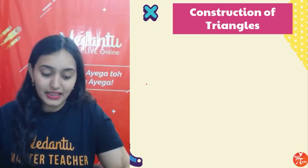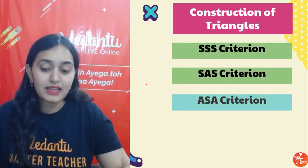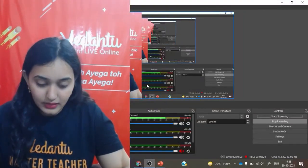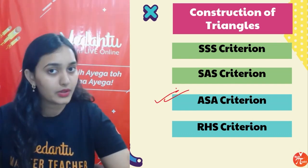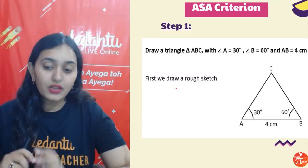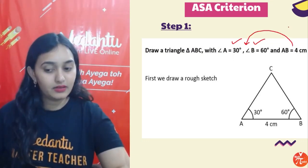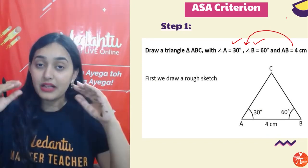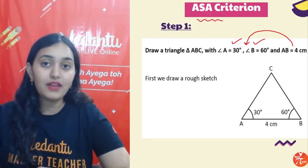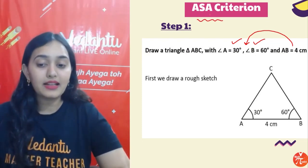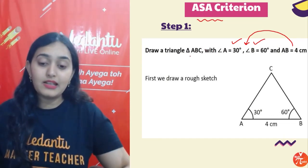Now let's talk about today's topic — construction of triangles. We have already learned SSS, SAS, ASA, and RHS criteria. Today we are going to learn about the ASA criteria, in which two angles of a triangle and the one side between them is given.